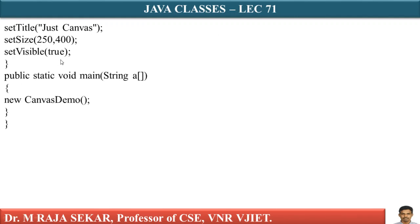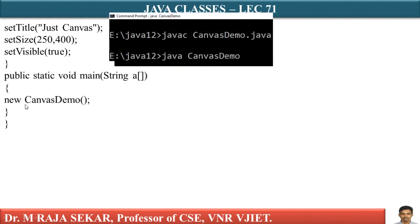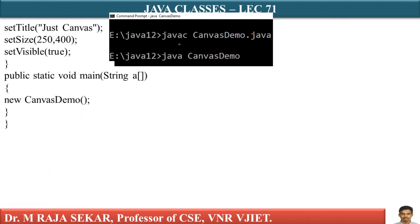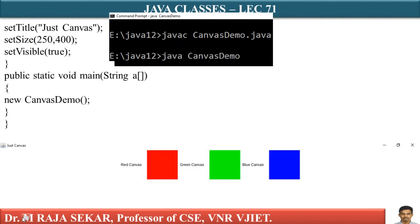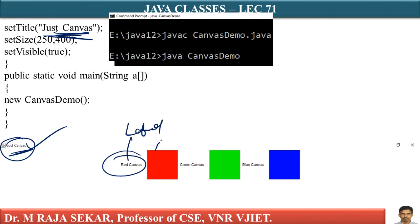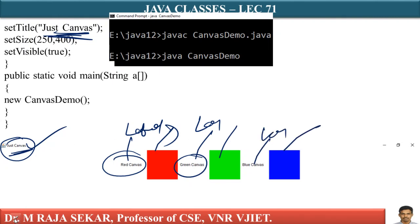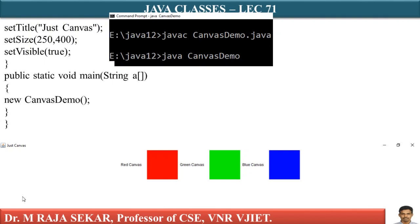Set title to 'Just Canvas'. The frame size is 250 by 400. Set visible true. In the output screen, the title says 'Just Canvas'. You can see label, canvas, label, canvas, label, canvas — that's what we were discussing. Now we will demonstrate this program, as it is simple and straightforward.